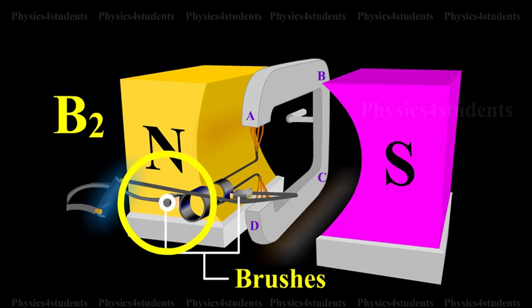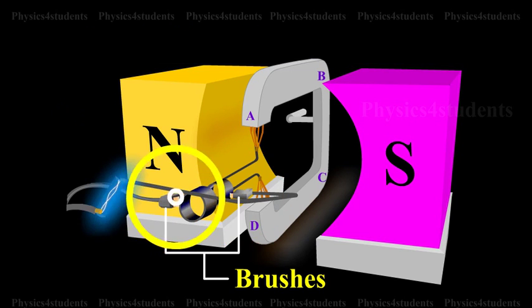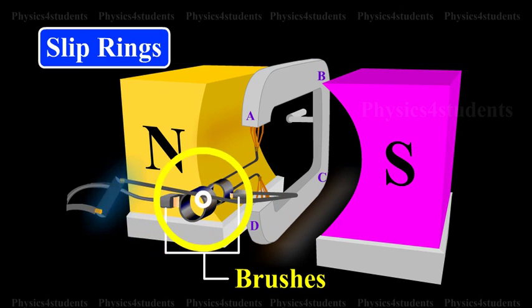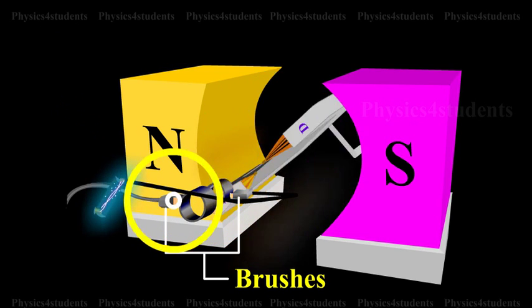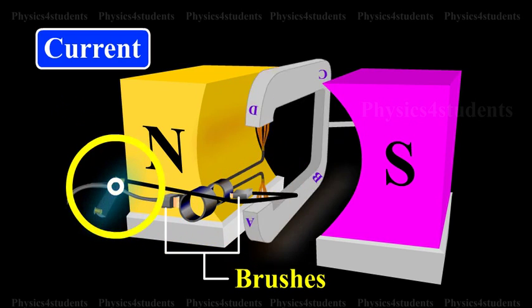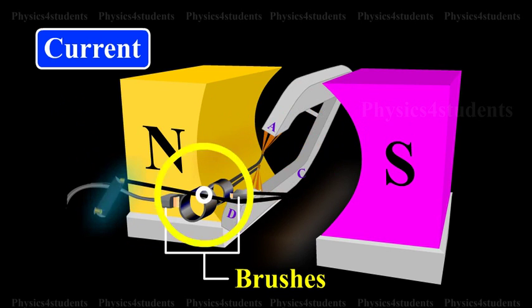Brushes: B1 and B2 are two flexible metallic plates or carbon brushes. They provide contact with the slip rings by keeping themselves pressed against the ring. They are used to pass on the current from the armature to the external power line through the slip rings.